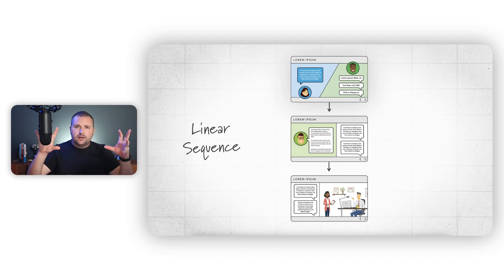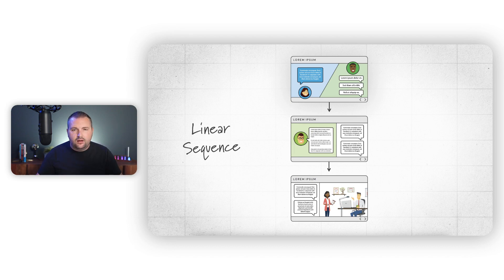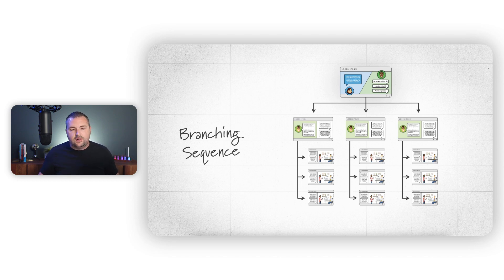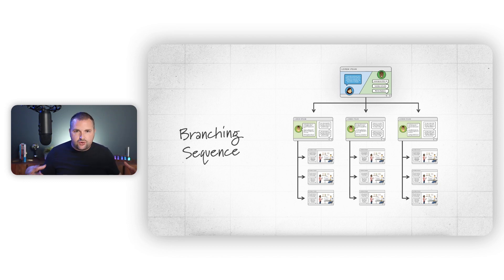A linear sequence can be just as effective as a true branching scenario. If you're brand new to this, you can ignore the word 'branching' — it can just be scenario-based e-learning. A true branching experience has a decision point that branches to, say, three different decision points, which then branch to three more, creating a really complex structure that can get overwhelming very quickly. I'll show a real-life example of one of these as well.